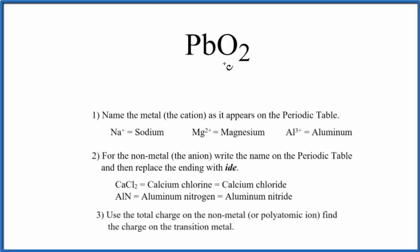To write the name for PbO2, we have a metal here, that's the Pb, lead, and then we have a nonmetal, oxygen. So when we have a metal and nonmetals, this is an ionic compound.